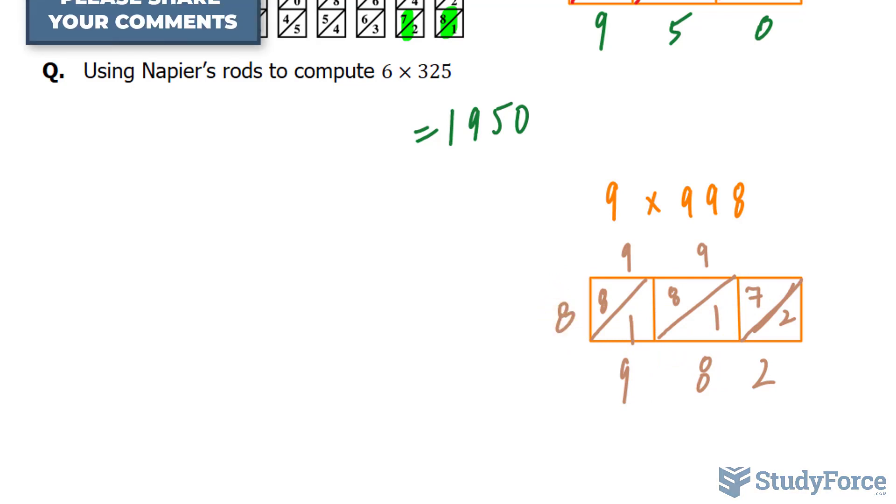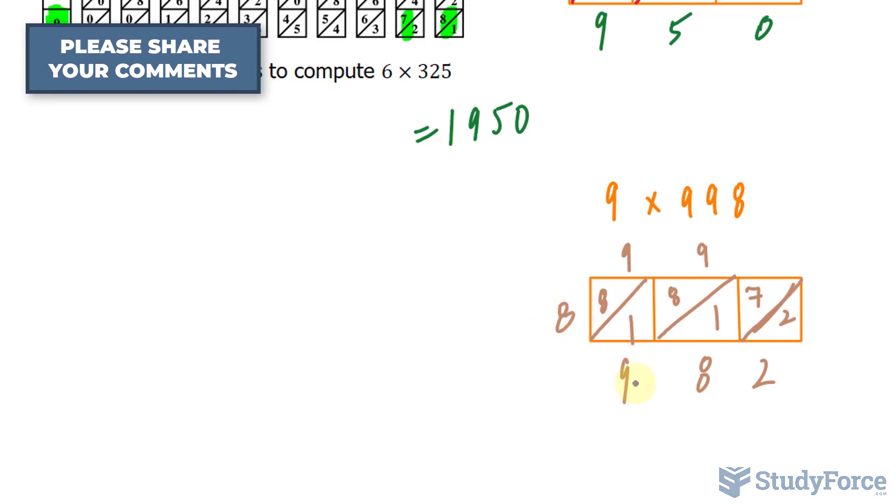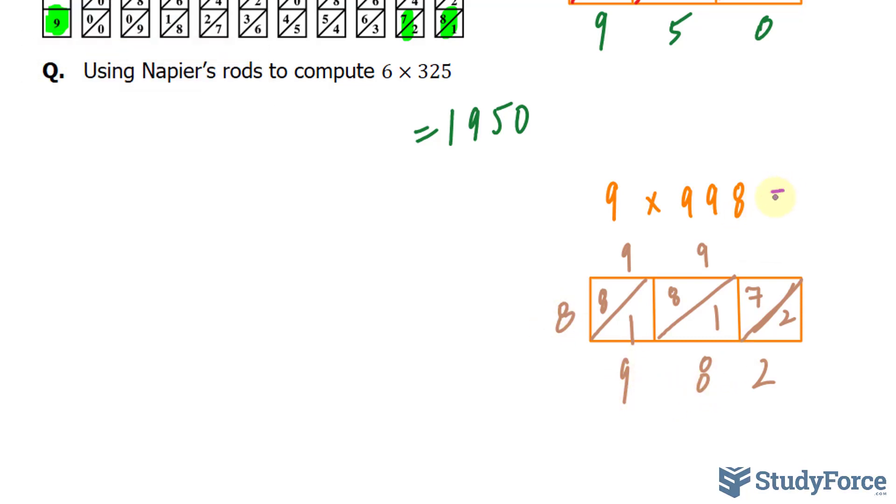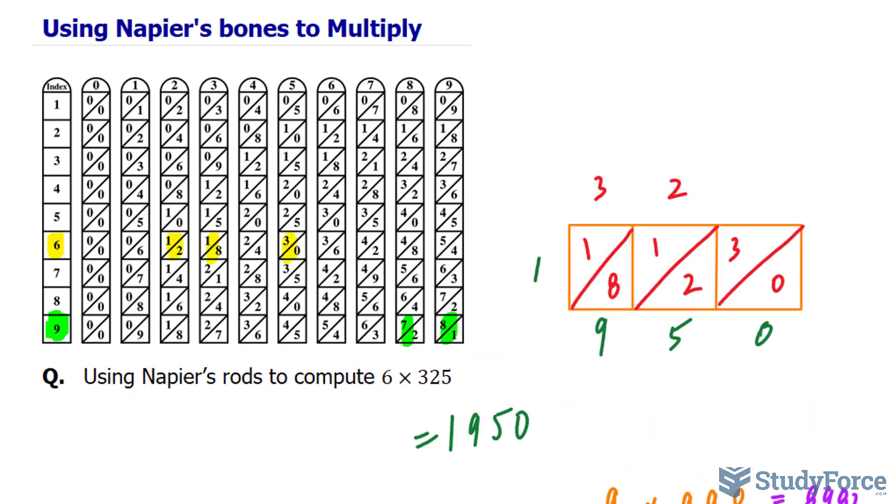The product or the answer to 9 times 998 is 8, 9, 8, 2. And there you have it. Now you know how to multiply using Napier's bones.